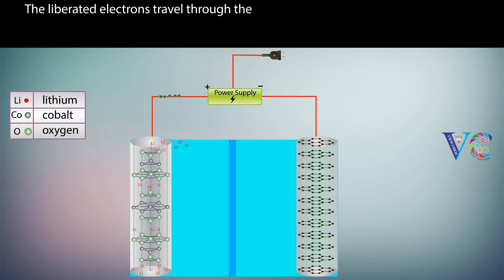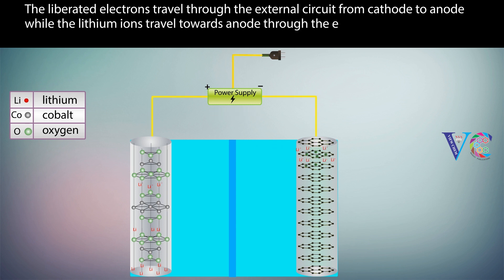The liberated electrons travel through the external circuit from cathode to anode, while the lithium ions travel towards anode through the electrolyte by passing through the separator.